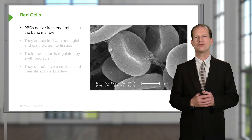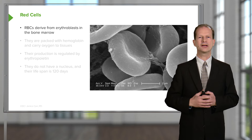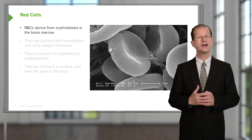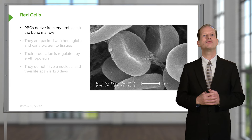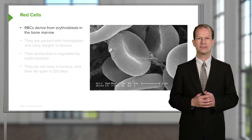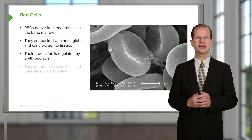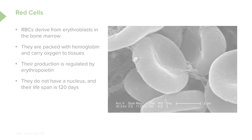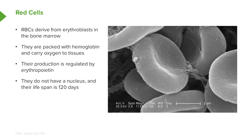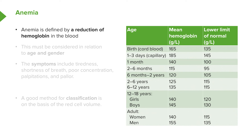Let's start with the red cell itself. Here is that very familiar electron micrograph of red cells showing their biconcave shape. Red cells derive from erythroblasts in the bone marrow. They're packed with hemoglobin and they carry oxygen deep into tissues. The production of these cells is regulated by erythropoietin, and they don't have a nucleus, so their lifespan is limited and is around 120 days.